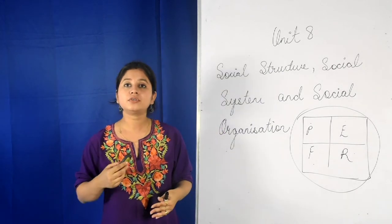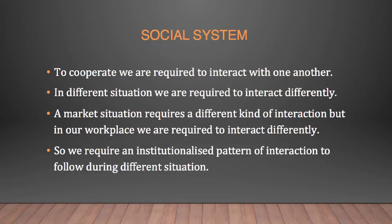In order to cooperate with one another, we must interact with one another. In different situations, we are expected to interact differently. For example, when you are going to a marketplace, you interact with the shopkeeper differently than when you are in an educational institute interacting with your teacher or students. So we require an institutionalized pattern of interaction to follow during different situations, and this is known as social system.